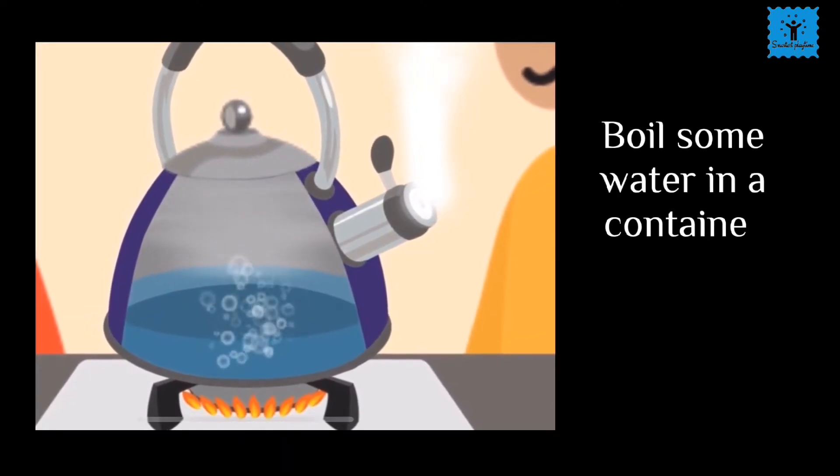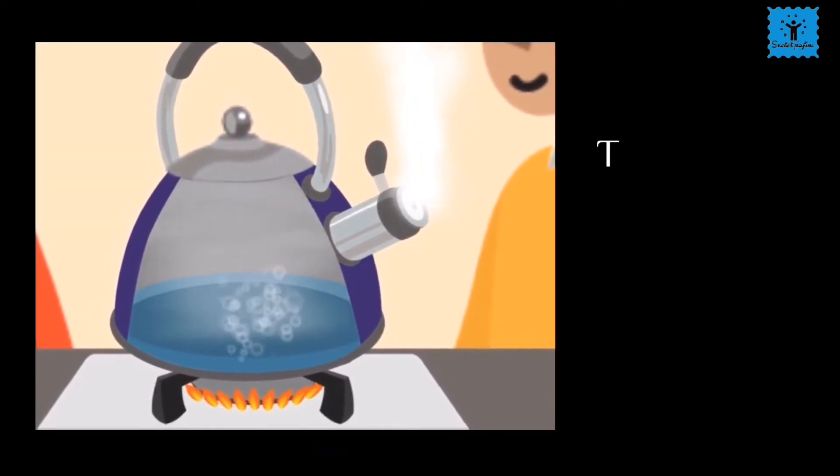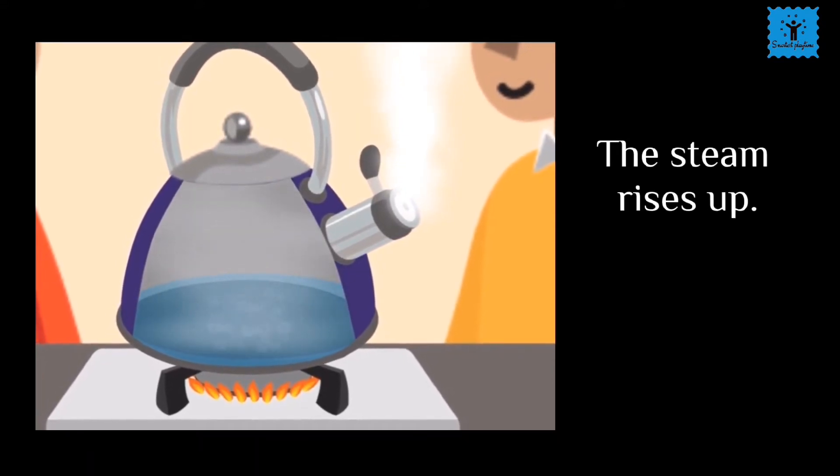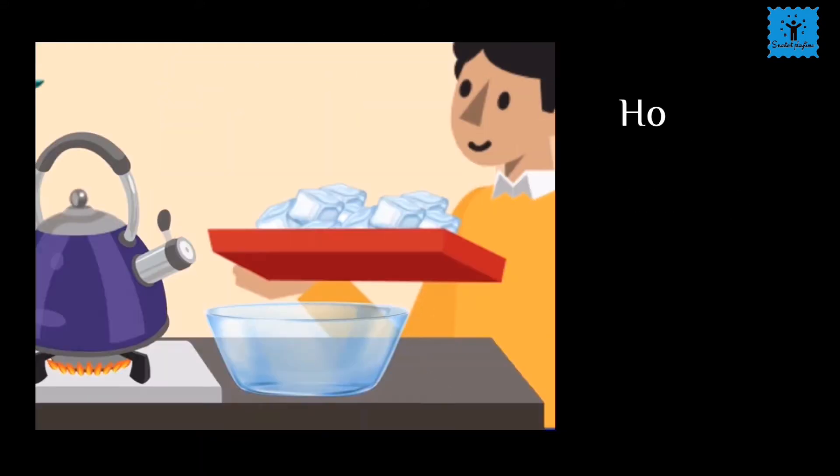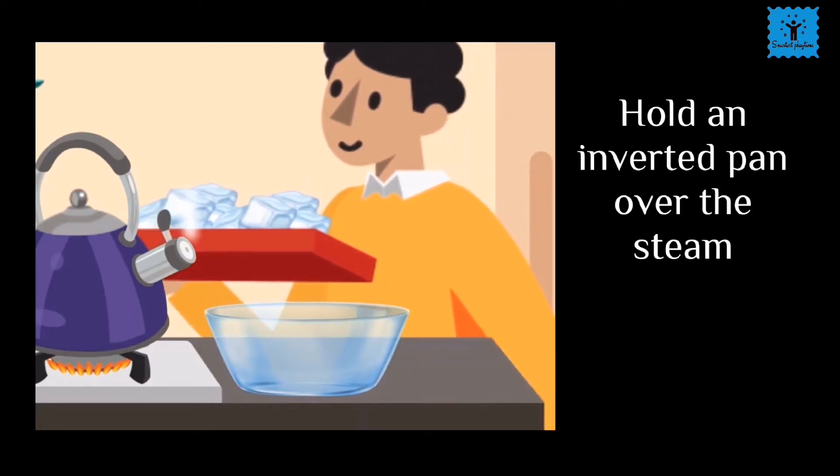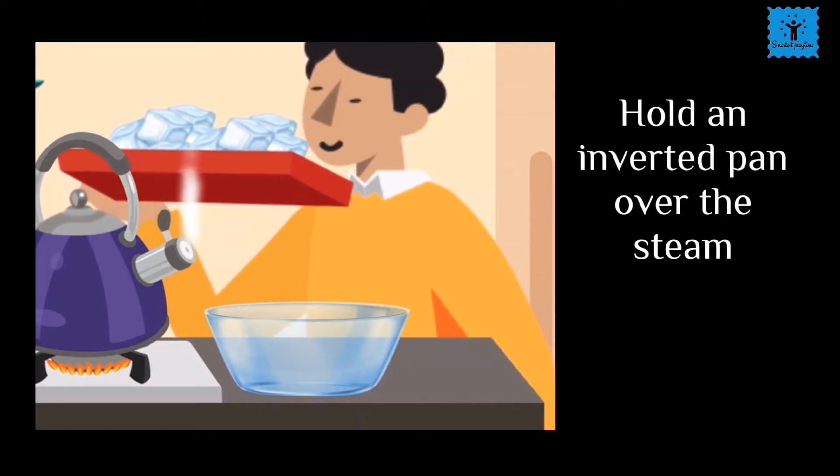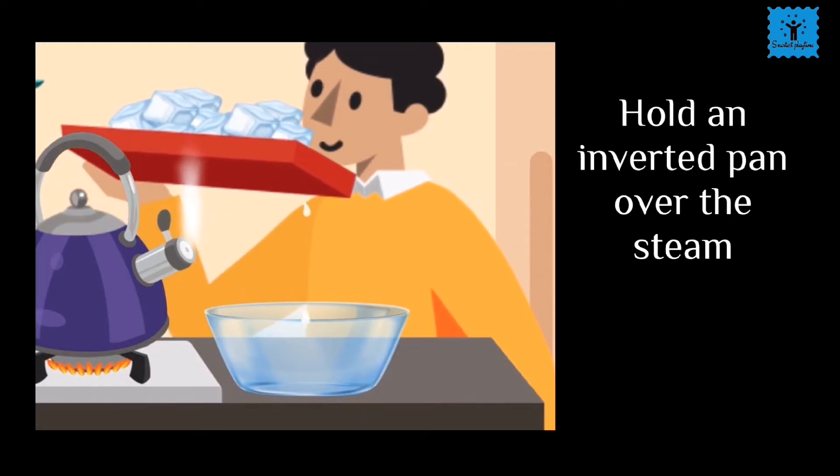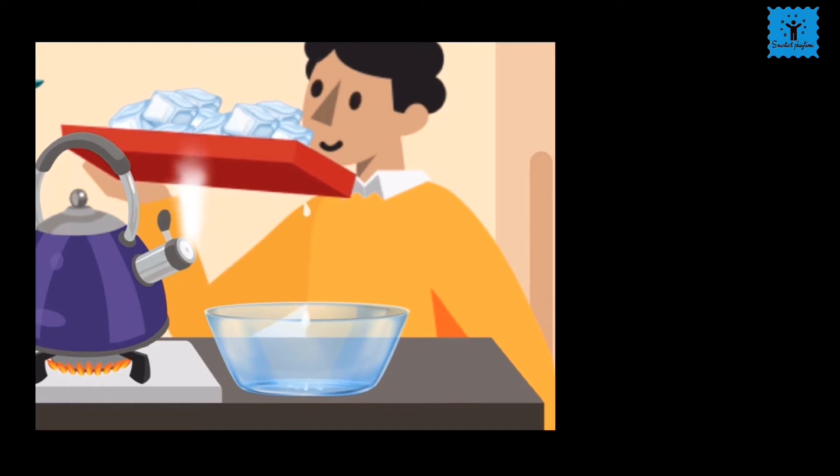Let's take one more example. Boil some water in a container. You will notice that the steam rises from the surface of the water. Now hold an inverted pan by its handle over the steam at some distance from the boiling water. You will observe tiny droplets of water on the surface of the pan.